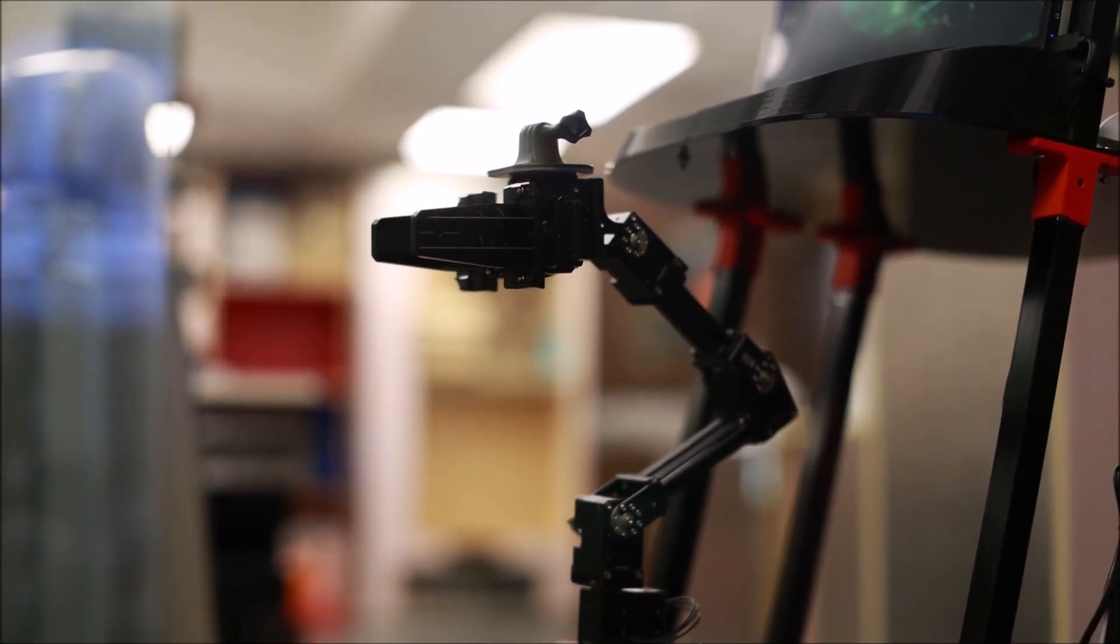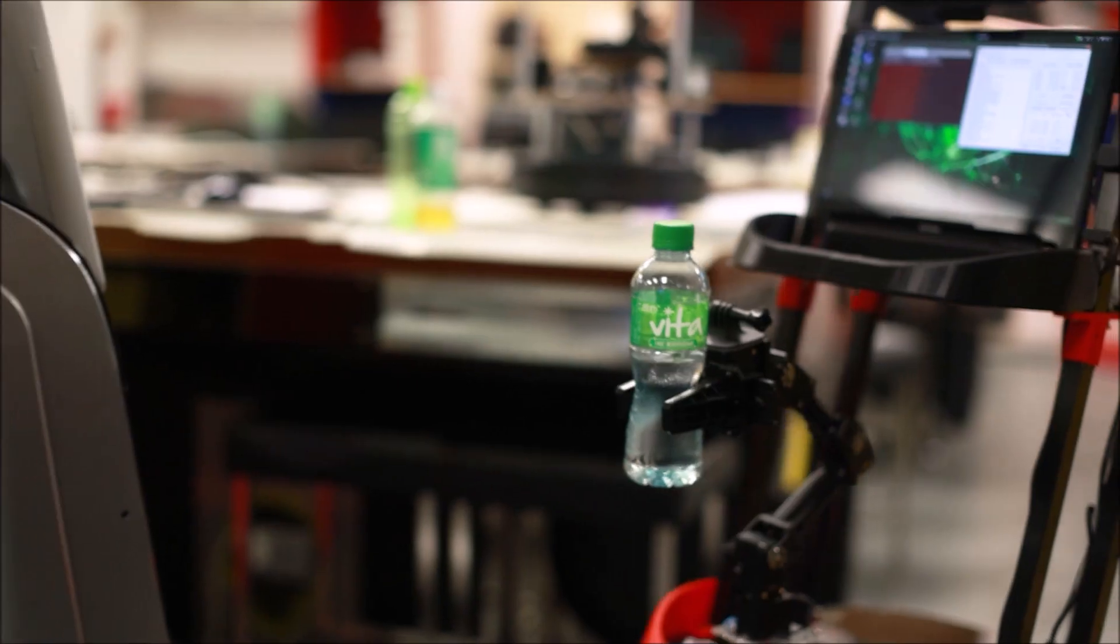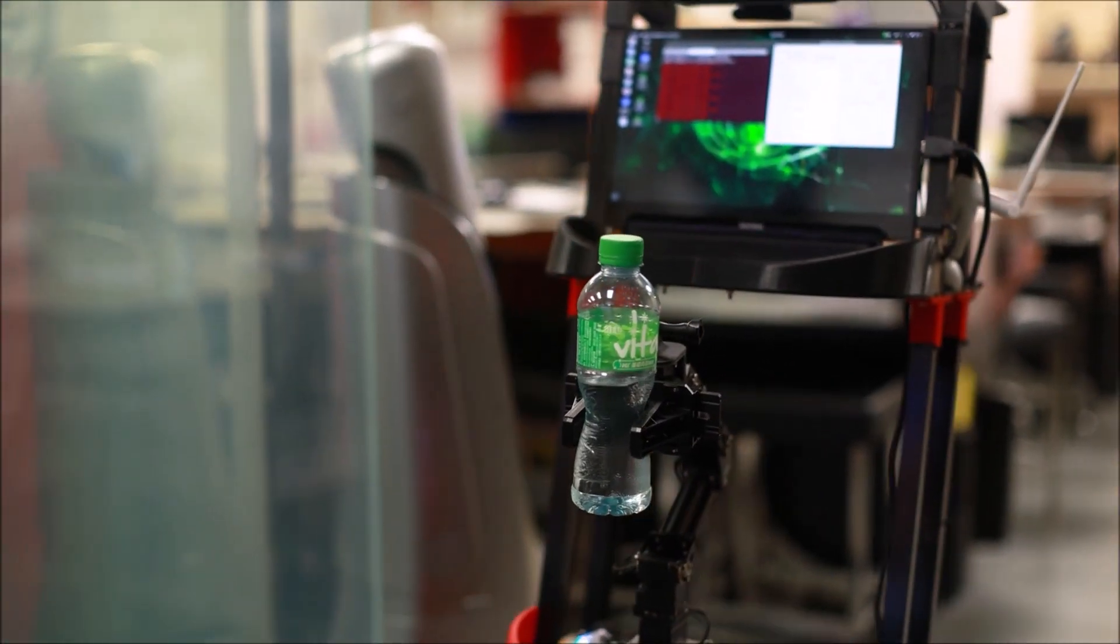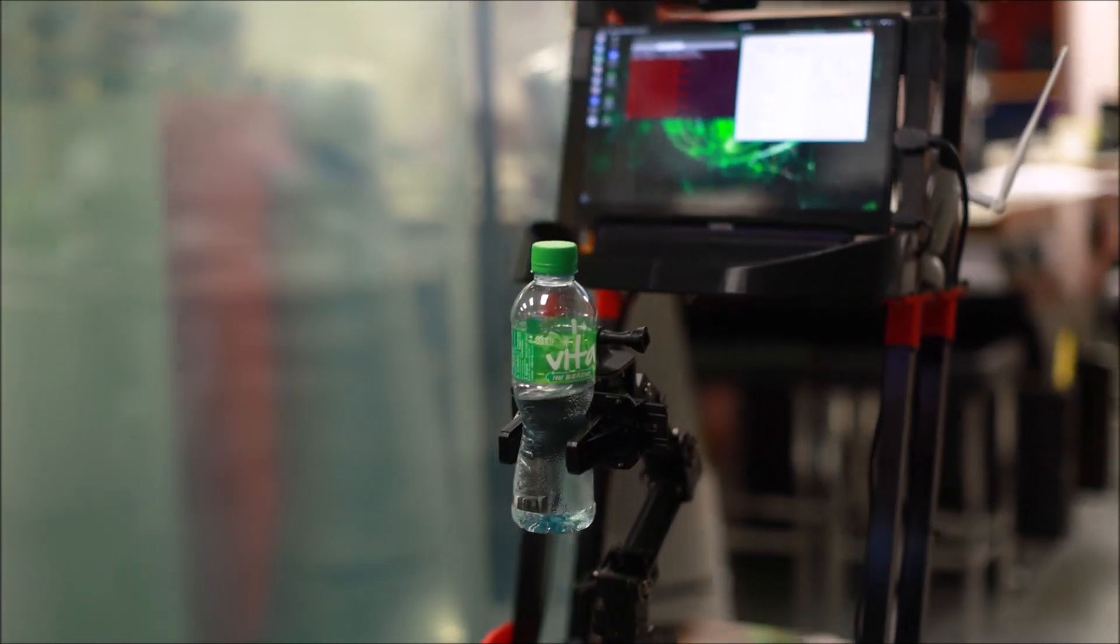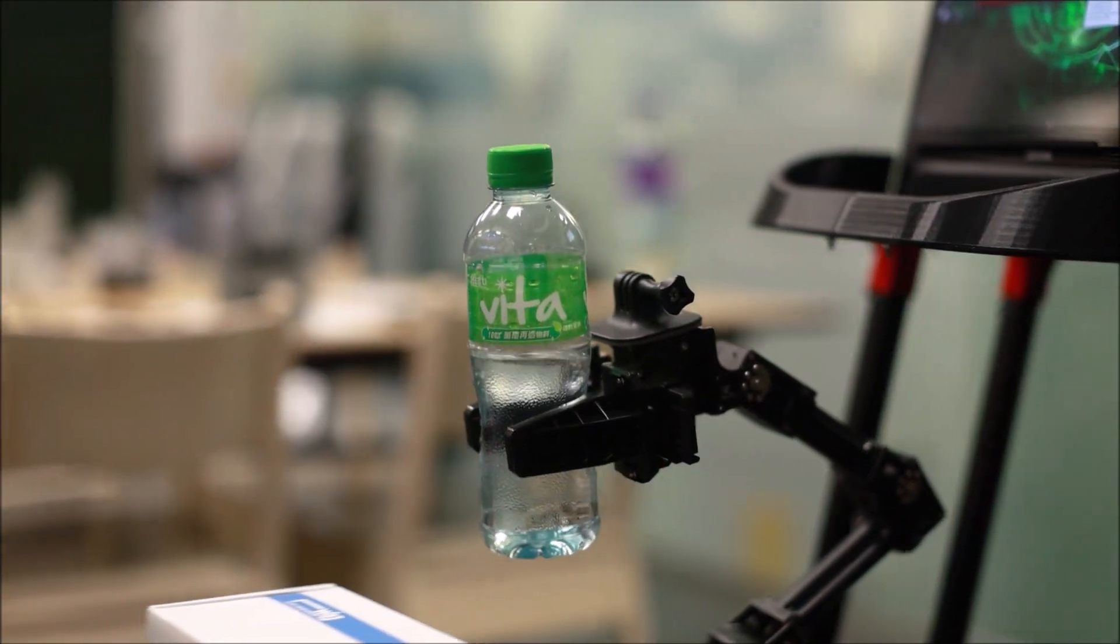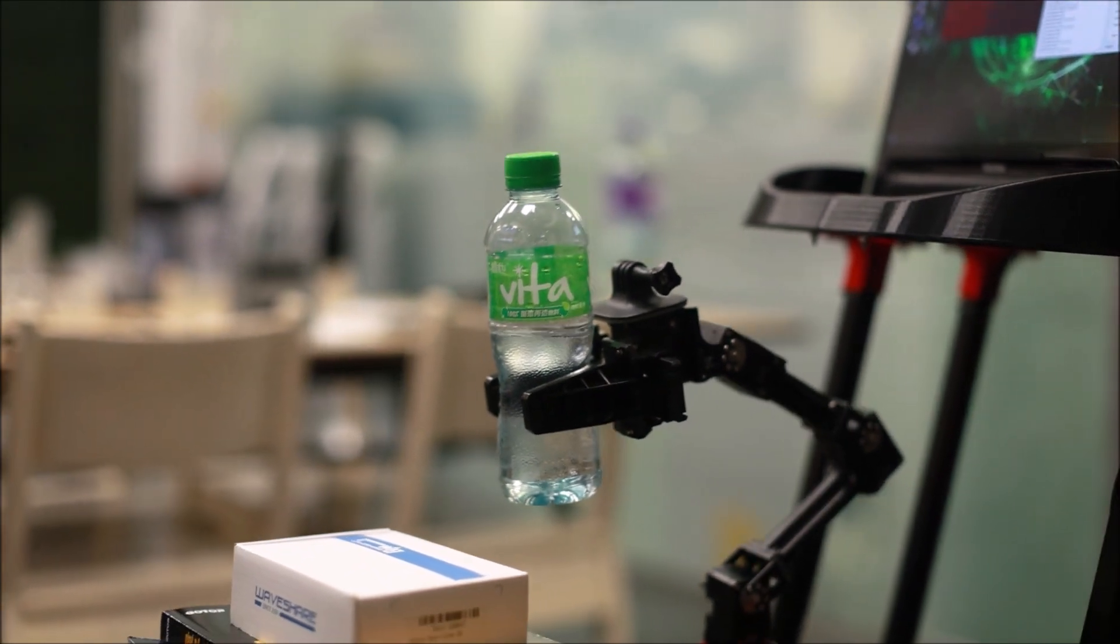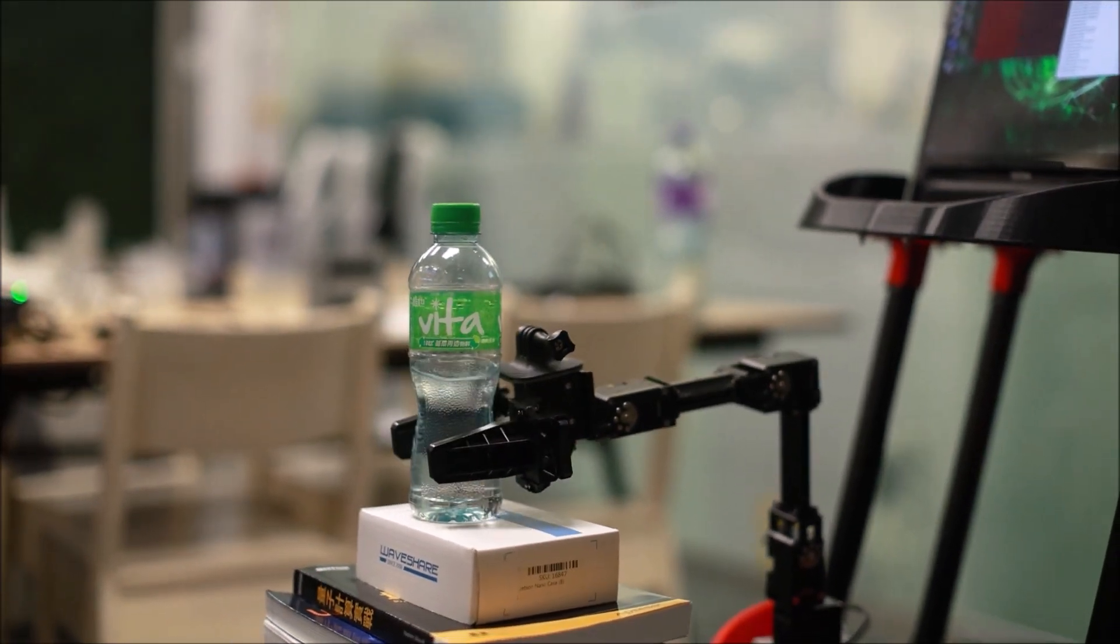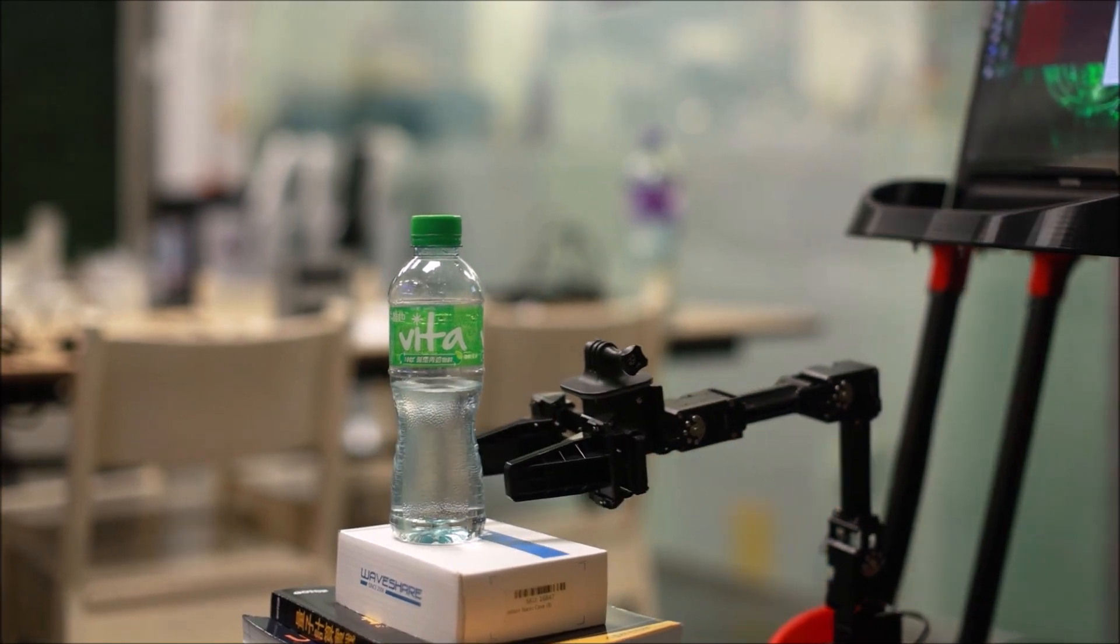After collecting the data, we can calculate the X, Y, Z axis value using proportional calculation. Eventually, we control each servo to grab the object and deliver it to other places. This function requires precise control, so we need lots of refinements to accomplish this effect. In our theme, this function is used to carry drinks to customers in a restaurant.